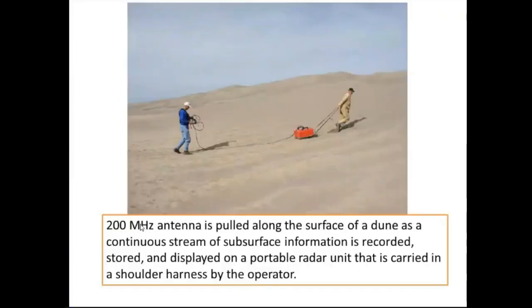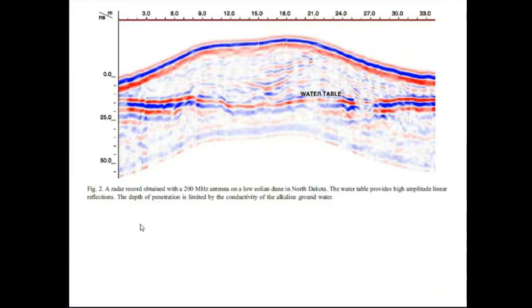After doing the survey, they found this is the dune. They did some surface correction - this is the dune, it should look like a dune. They used a 200 megahertz antenna. This is the time - remember that NS means nanosecond. At this time you are having the water table and it has a relationship like this.